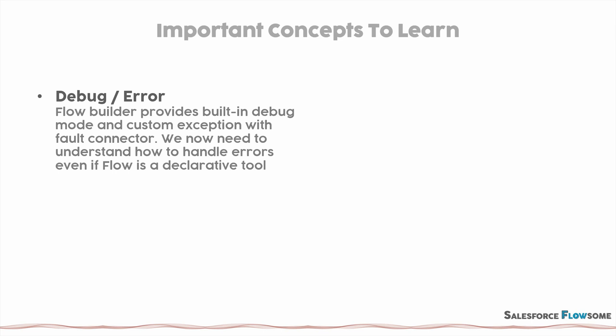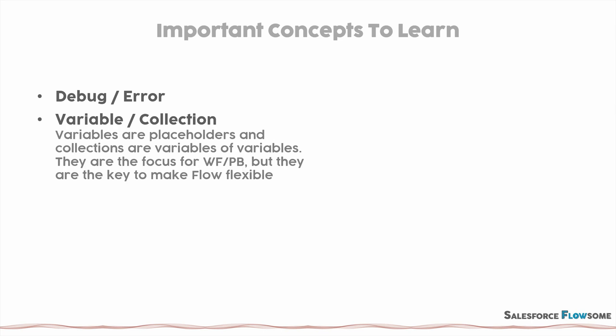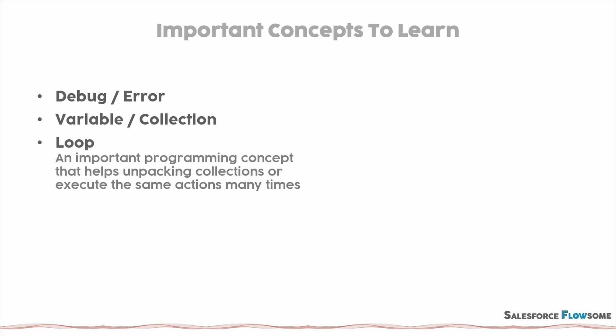The second concept is variable and collection. They do exist in workflow and process builder, but we just never had to handle them explicitly. The key to making your flow flexible is actually in how you can manipulate variables and collections, so it's very important to understand what they are and what they can do. The third concept is loop — a very important programming concept that exists in every programming 101 course. It's basically just doing the same actions again and again, and it's also a very important concept when it comes to flow.